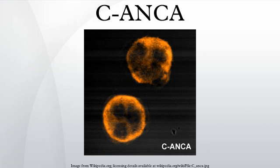These antibodies show a diffusely granular cytoplasmic staining pattern under microscopy. This pattern results from binding of ANCAs to antigen targets throughout the neutrophil cytoplasm, the most common protein target being proteinase 3.